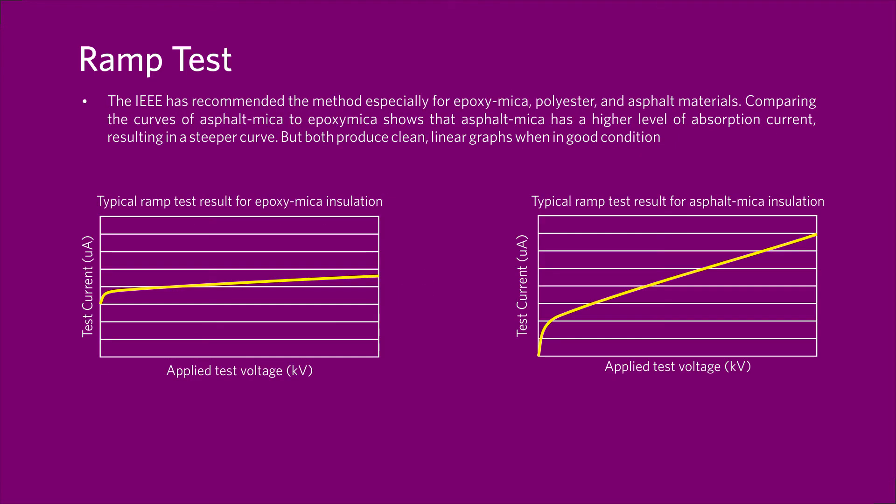The IEEE has recommended the method especially for epoxy mica, polyester, and asphalt materials. Comparing the curves of asphalt mica to epoxy mica shows that asphalt mica has a higher level of absorption current, resulting in a steeper curve. But both produce clean, linear graphs when in good condition.